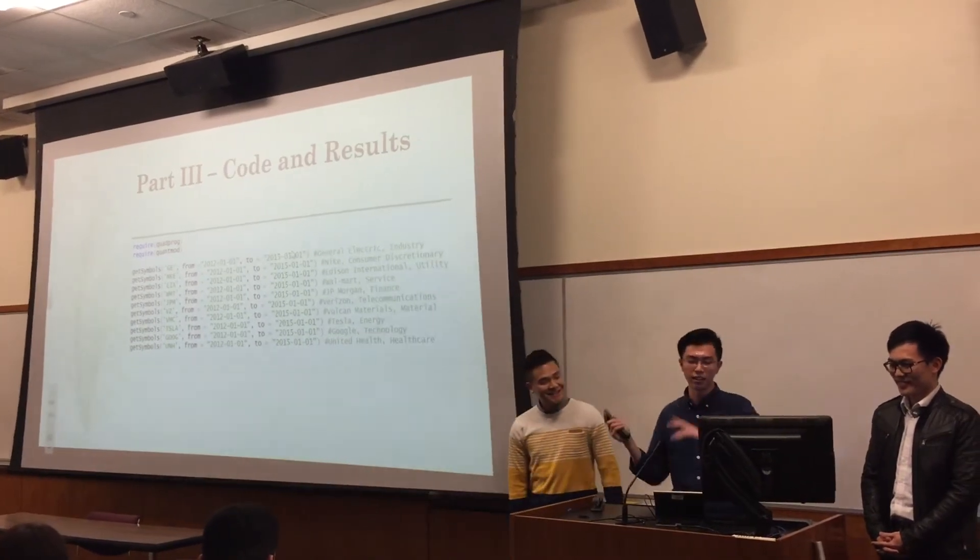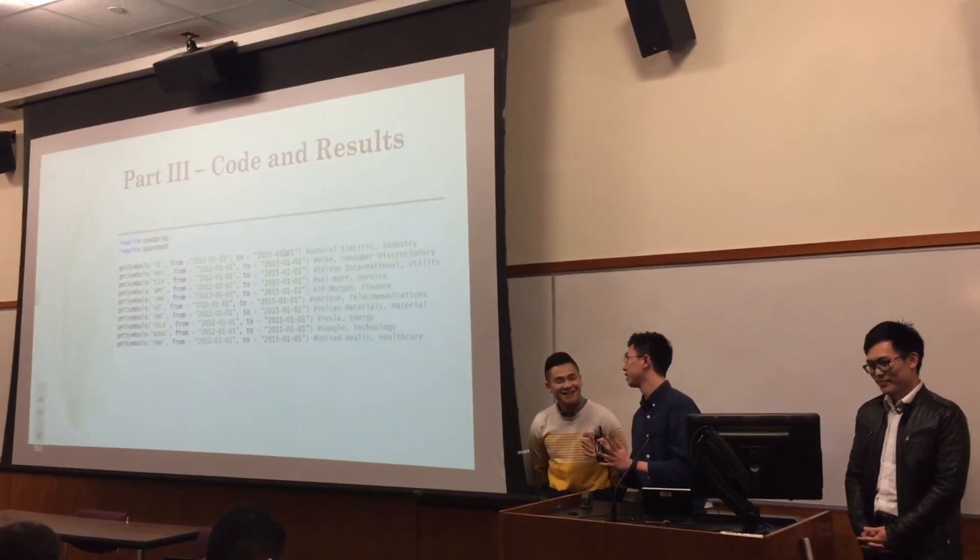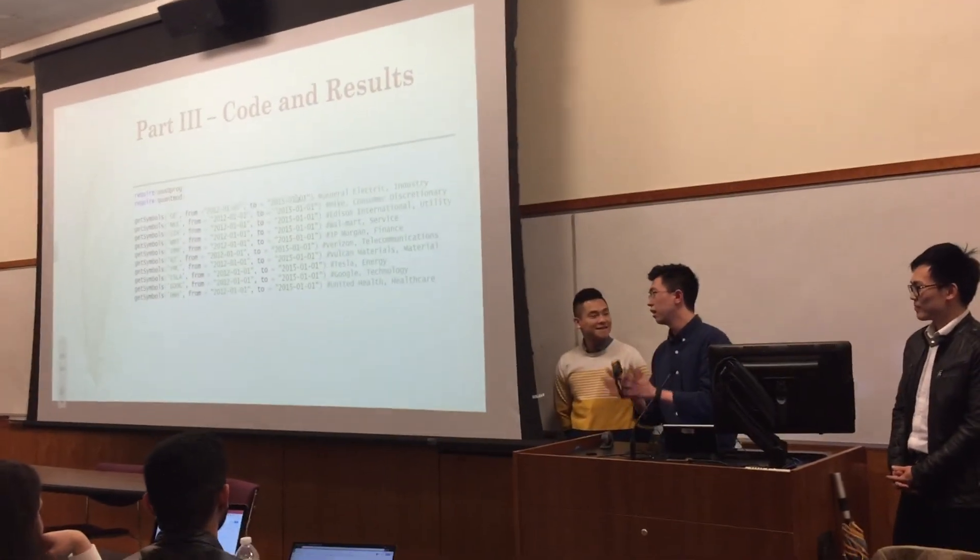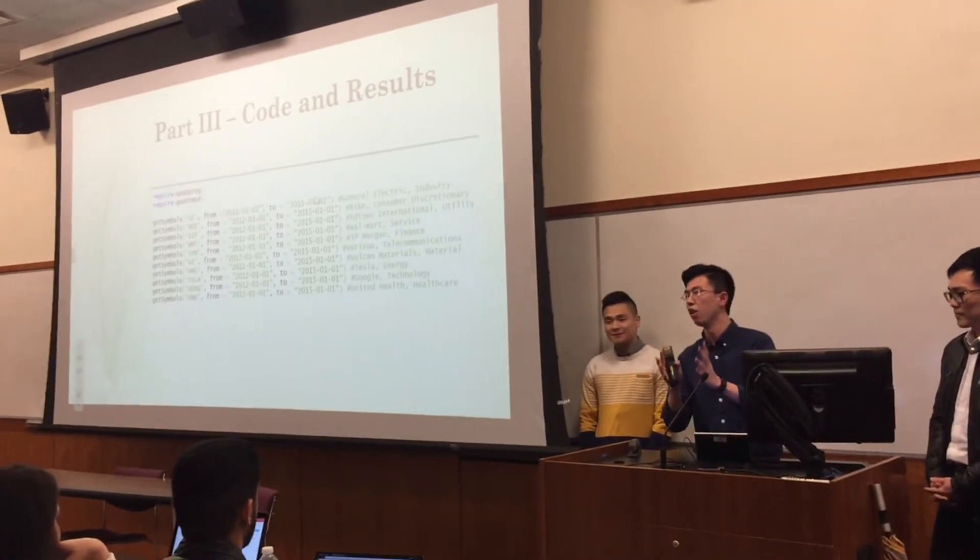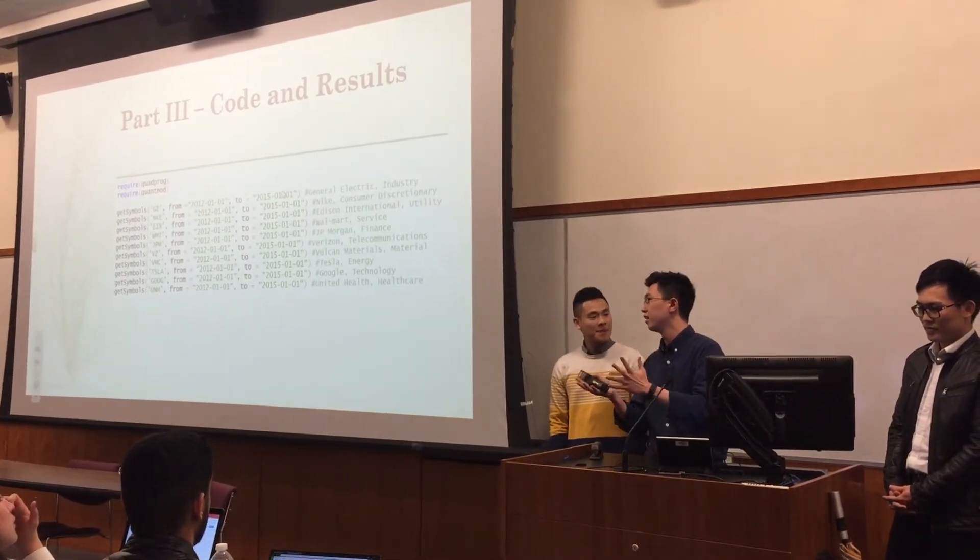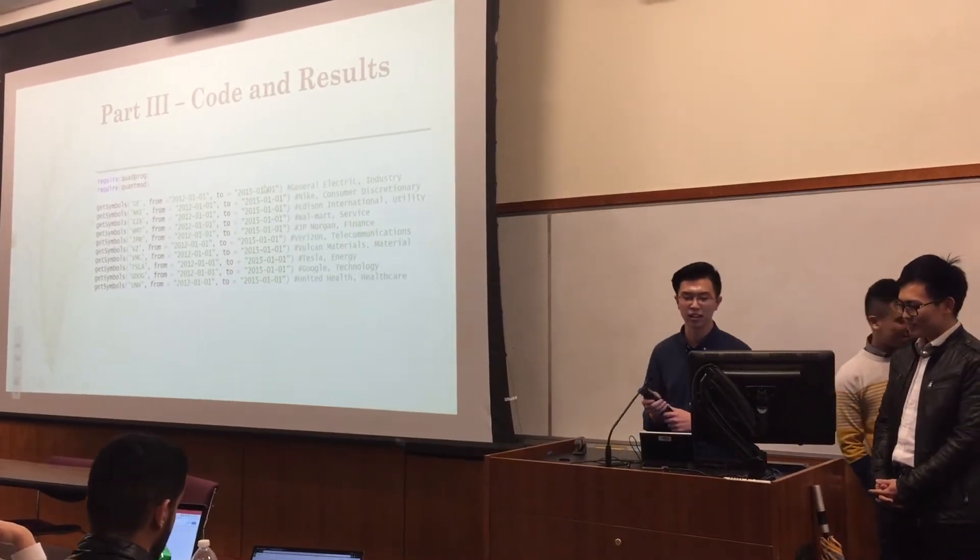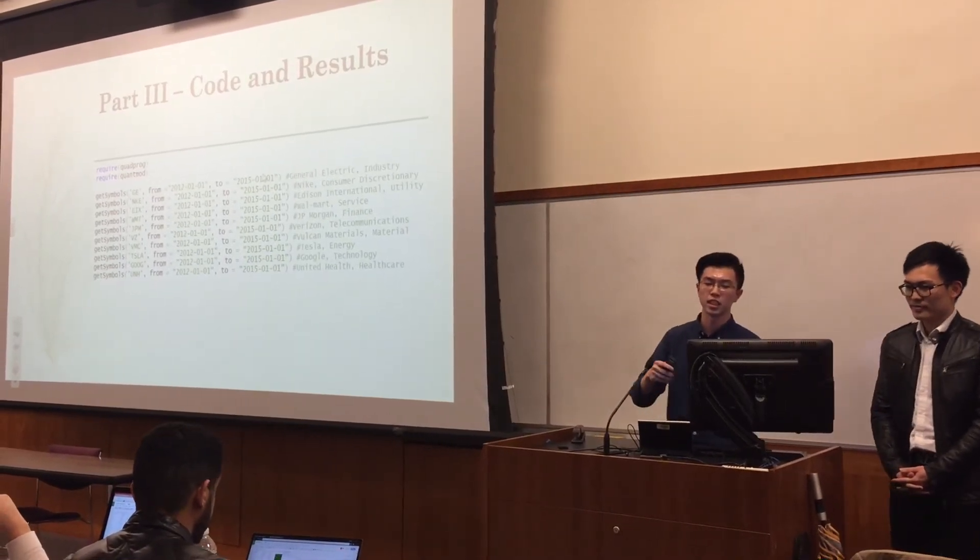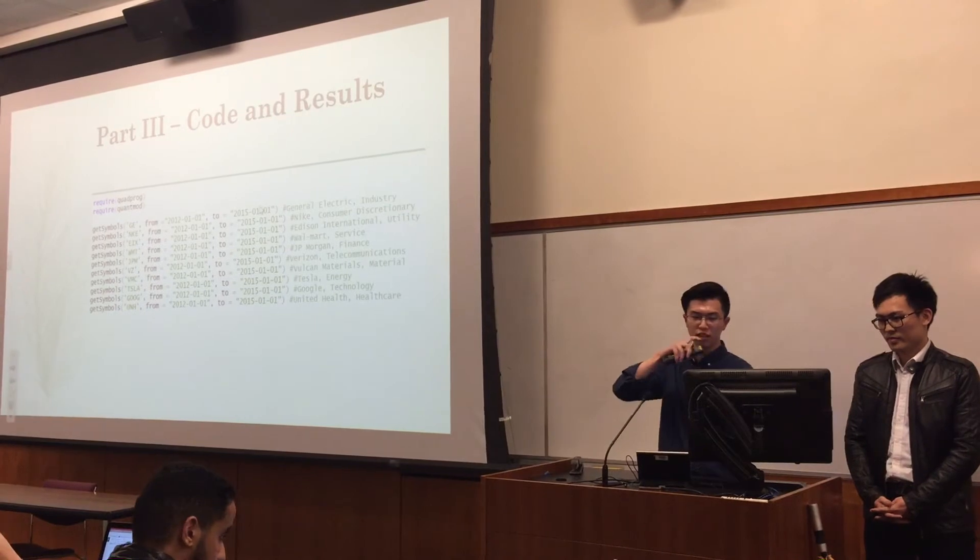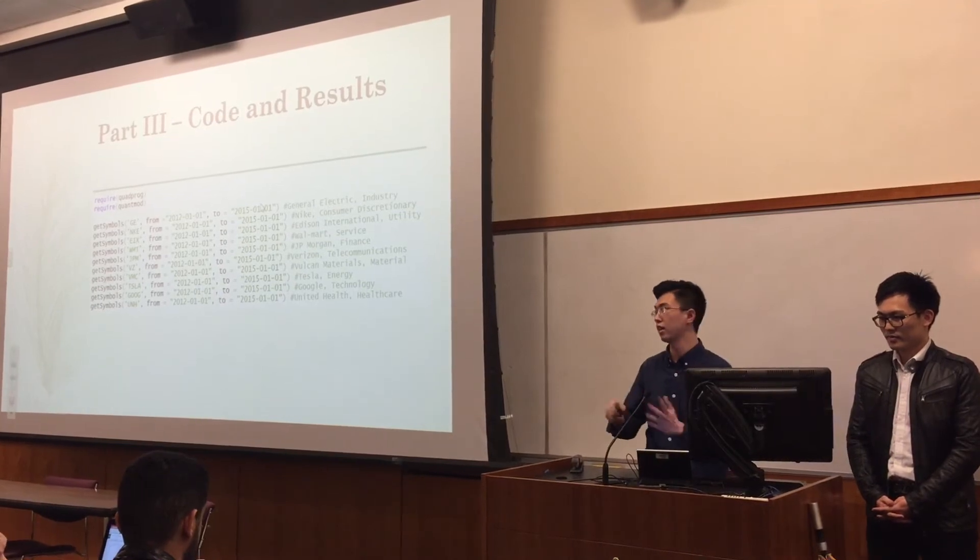First, this is download the data. But when I was reviewing the previous senior students' work, their problem is their minimum variance portfolio and their tangency portfolio always to be a portfolio consists of only one stock or asset. Why? I looked into it and the answer is the correlation is very high between their assets. So what I chose for the programming is, I chose from different sectors of the economy - GE from industry, Nike from consumers, EX from utility.